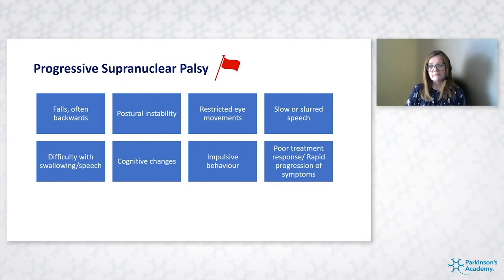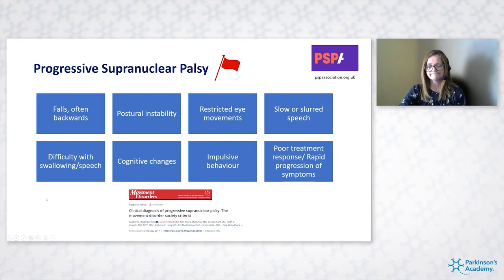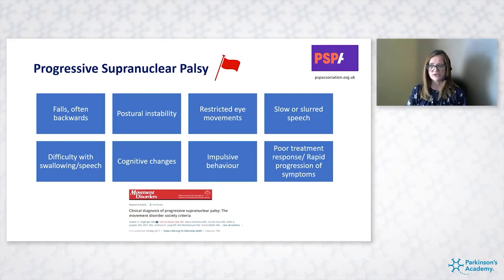People with PSP may also have cognitive changes that might initially appear like early dementia, and some can present with impulsive risk-taking behaviours — they just don't appreciate they're putting themselves at risk, particularly with mobility. Again, poor response to treatment and rapid progression are key things to look out for. The Movement Disorder Society has published diagnostic criteria for further detail, and the PSP Association has fantastic information for healthcare professionals and patients.